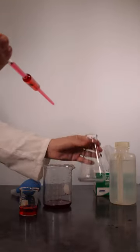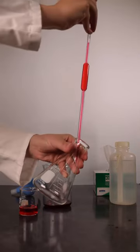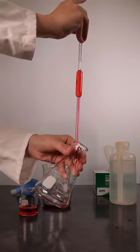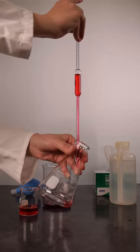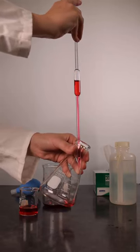Once the meniscus sits at the top of the calibrated line, place the pipette into an Erlenmeyer flask well below the top of the flask. Hold the pipette vertical with the pipette tip in contact with the inside of the flask.